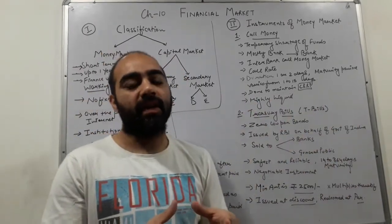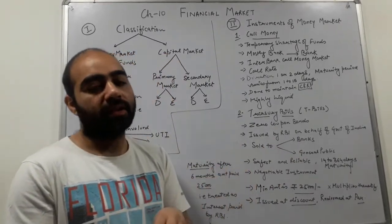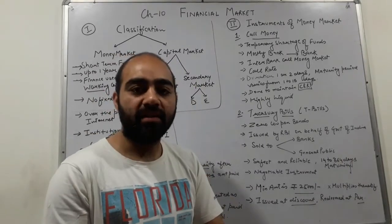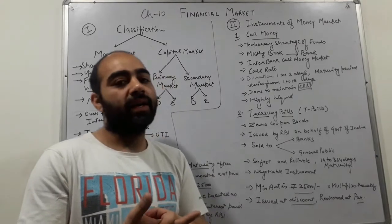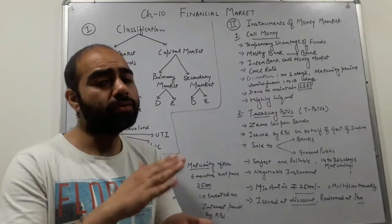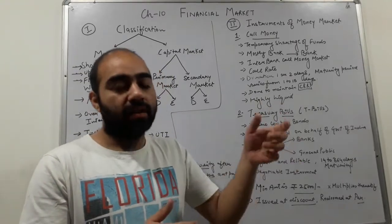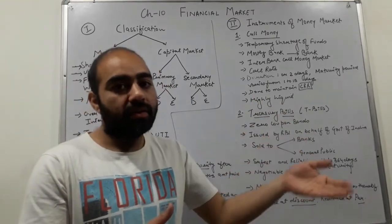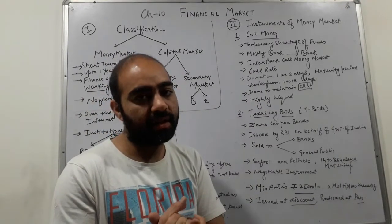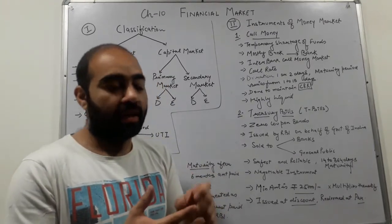Call money is used when a bank faces a temporary shortage of funds for one day or two days. For example, if HDFC Bank or ICICI Bank has a temporary requirement, they can borrow from another bank through call money. The borrowing bank will pay the lender bank some amount of interest, which is called call interest. This is done to maintain the CRR — Cash Reserve Ratio — the minimum balance every bank is required to maintain as instructed by the Reserve Bank of India.